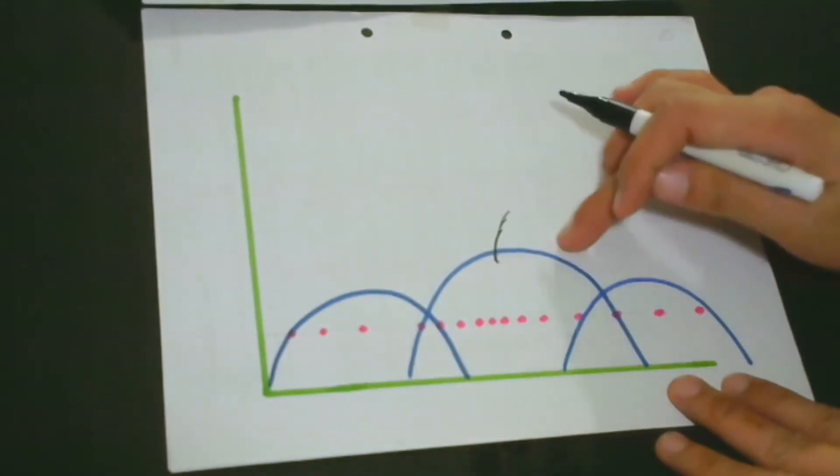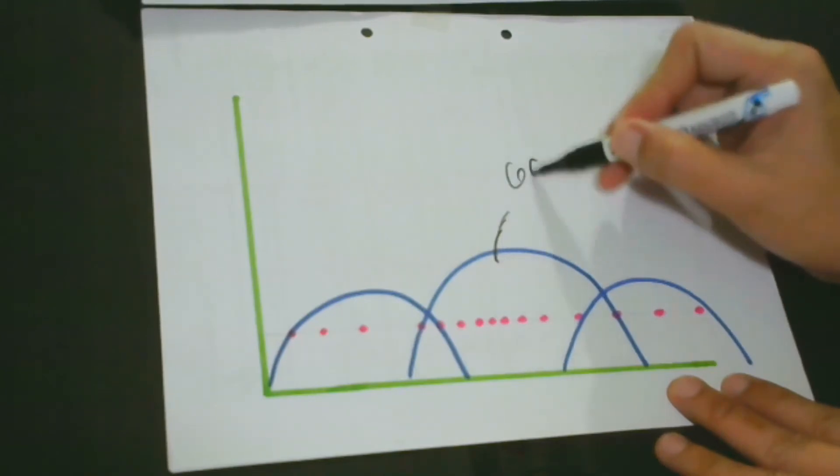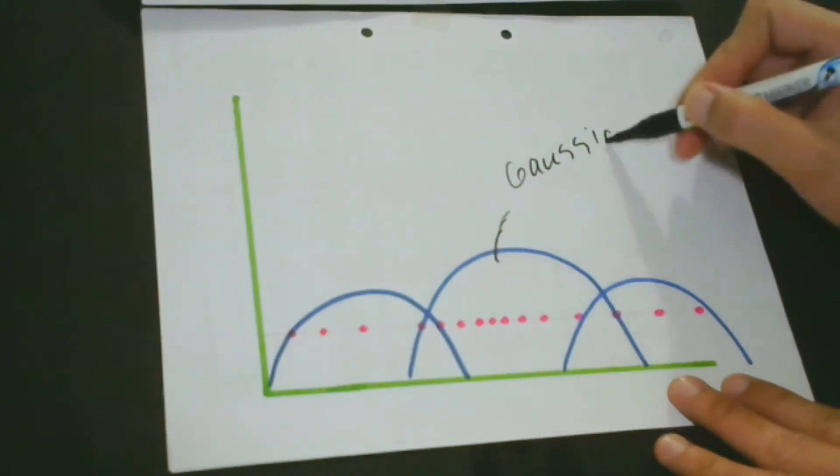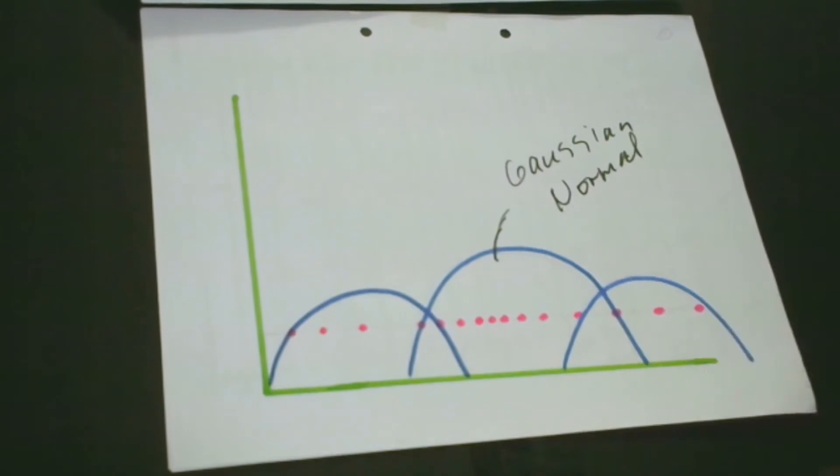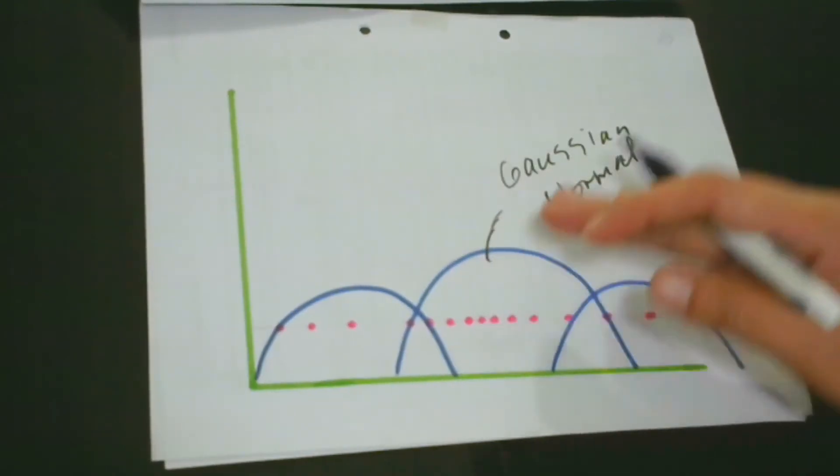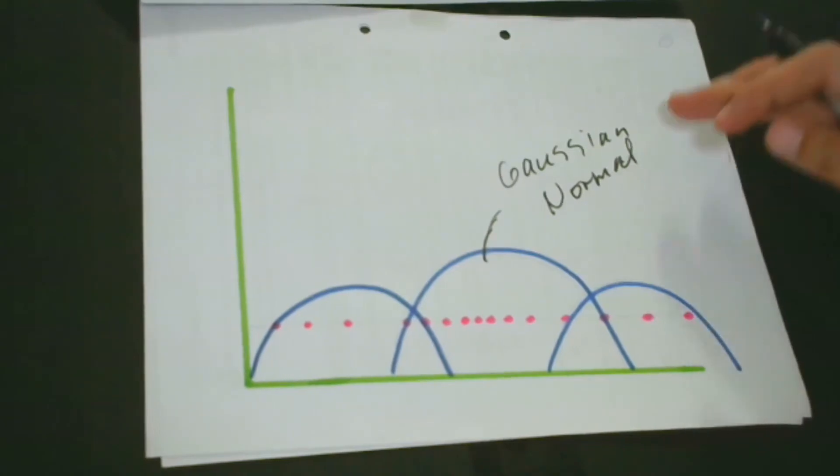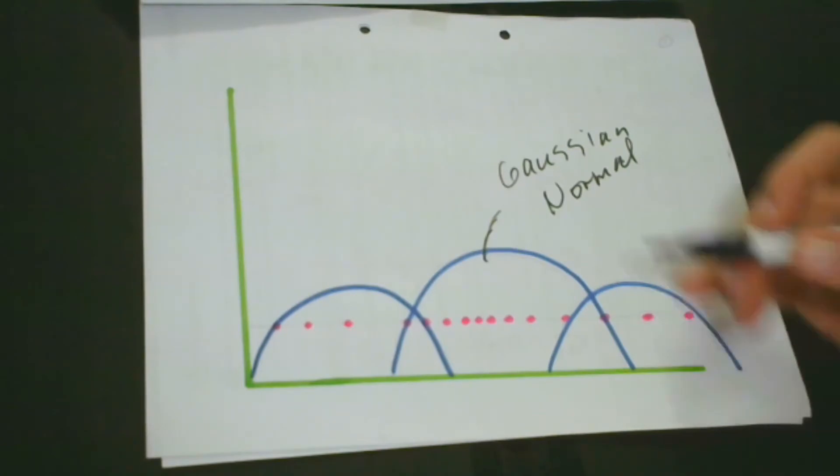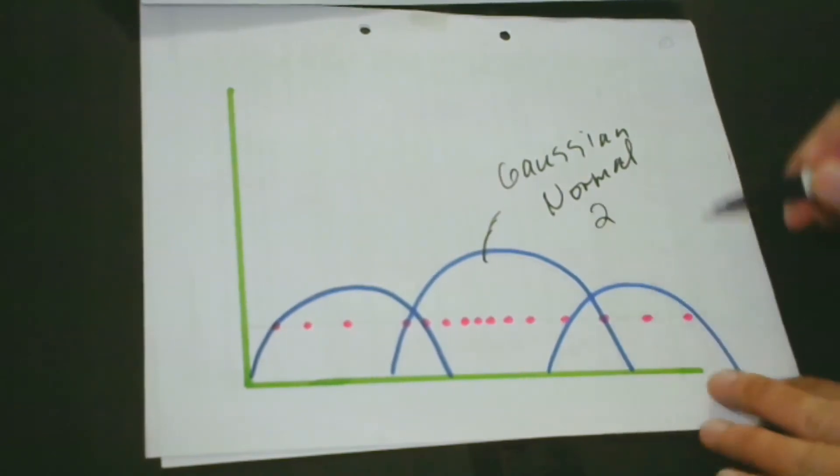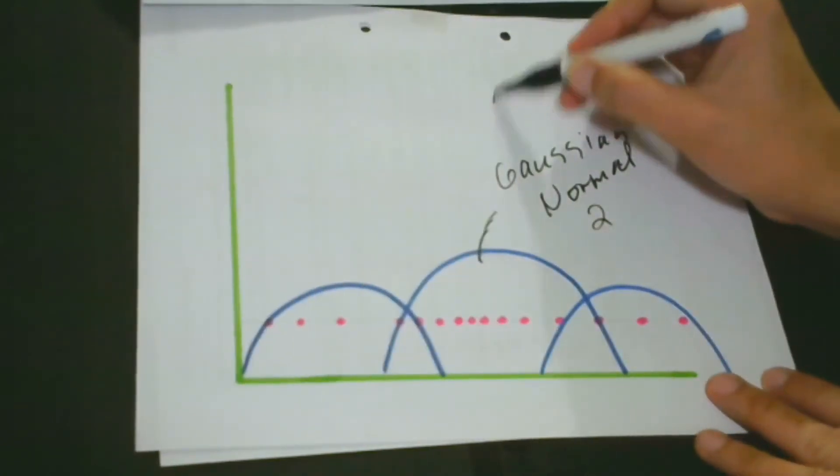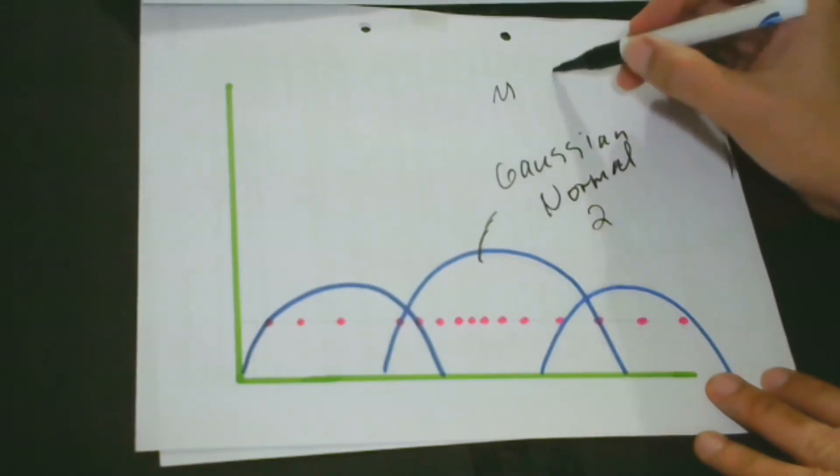We have already chosen that this model is the most acceptable model among these three. We can say that this is a Gaussian or normal distribution. If you recall our discussion about Gaussian distribution, we learned that a Gaussian distribution has two parameters: the mean and the standard deviation.